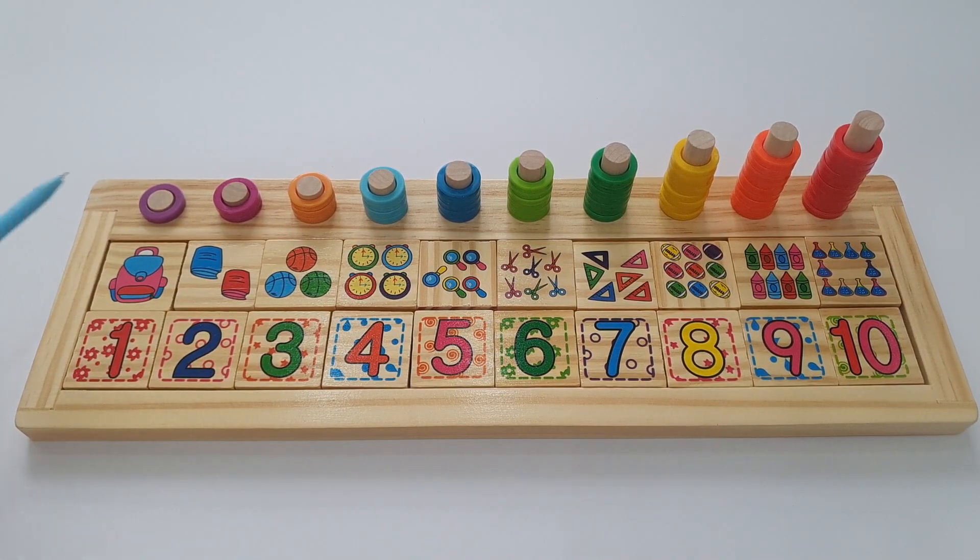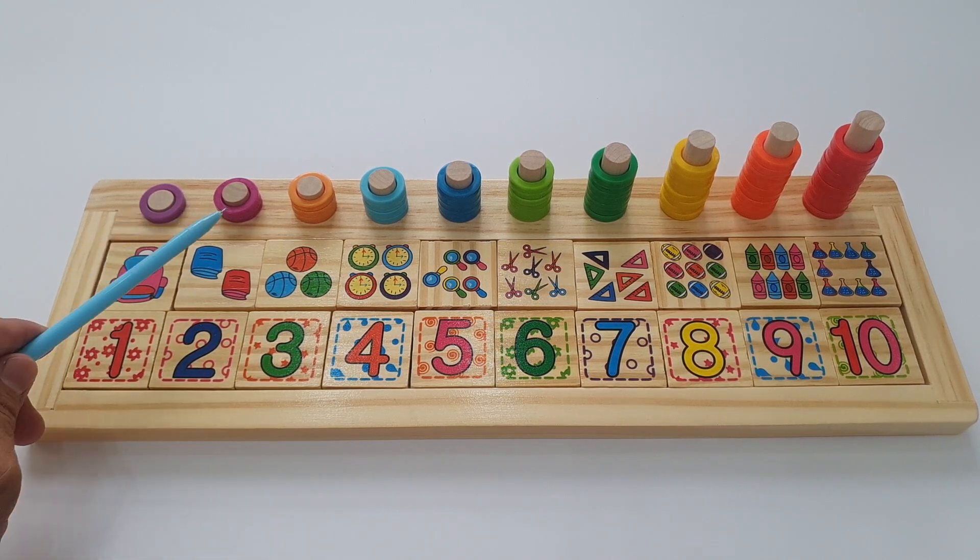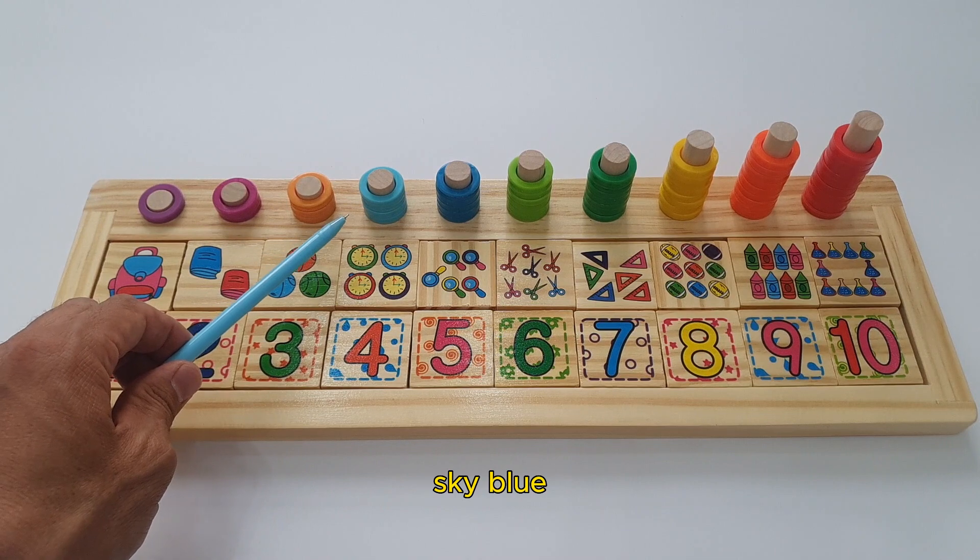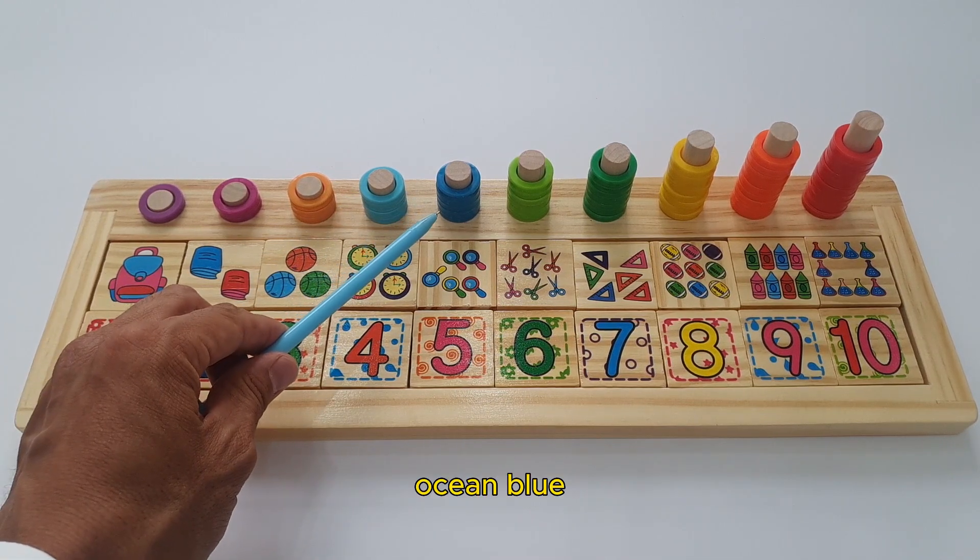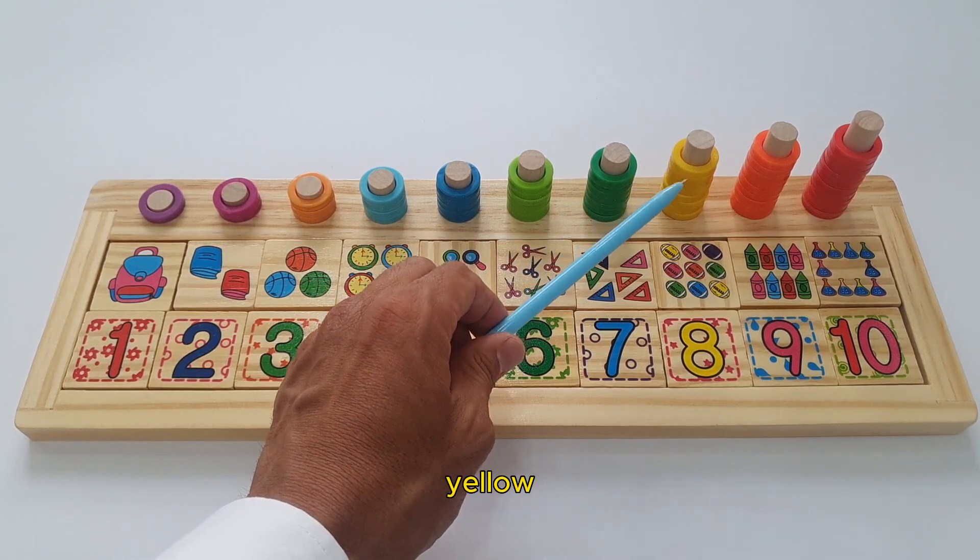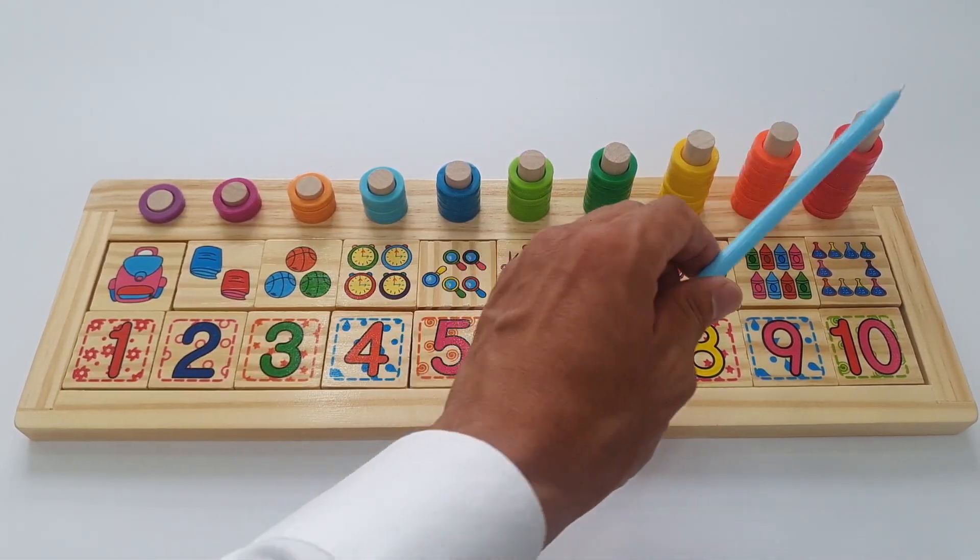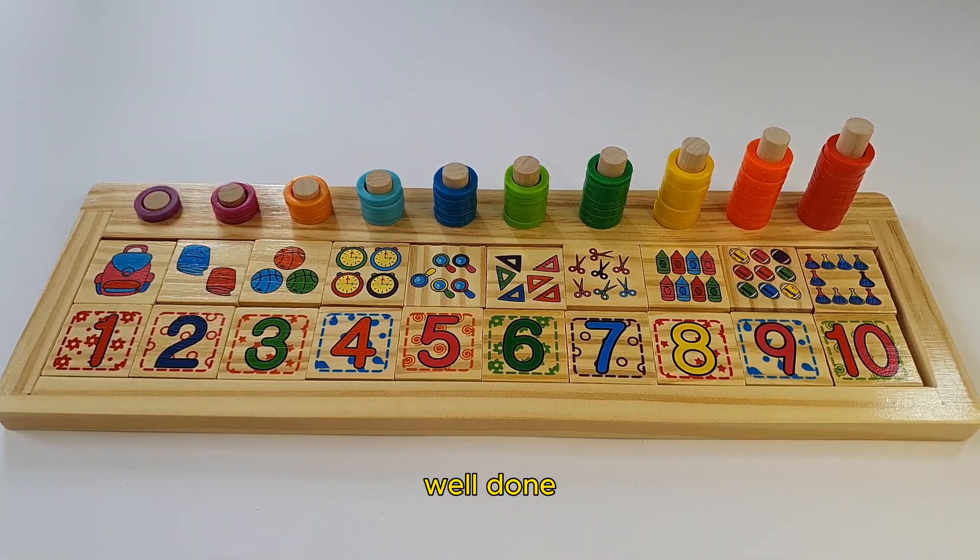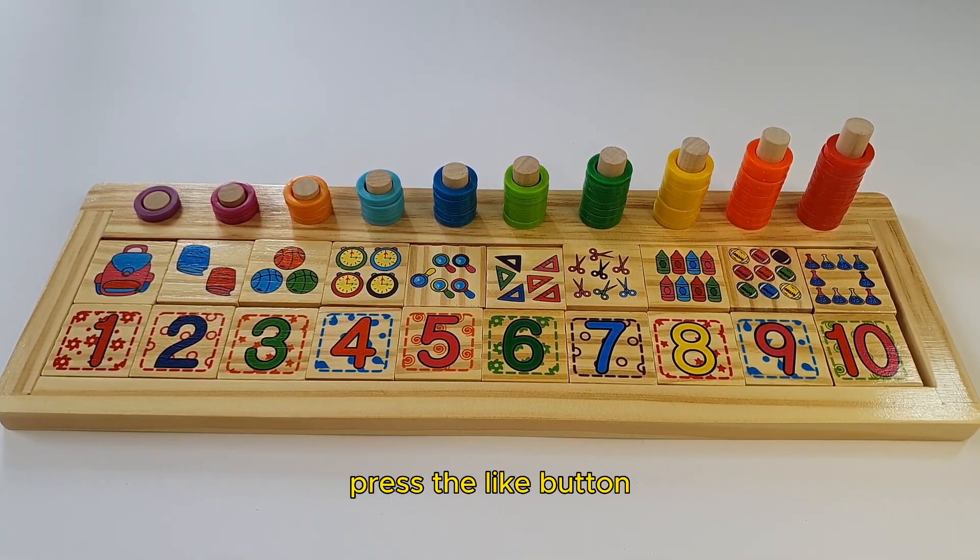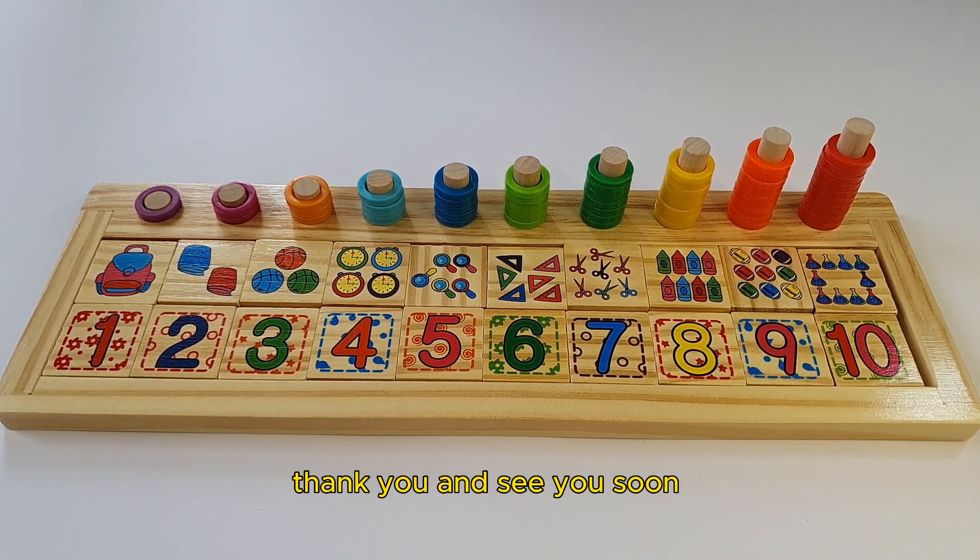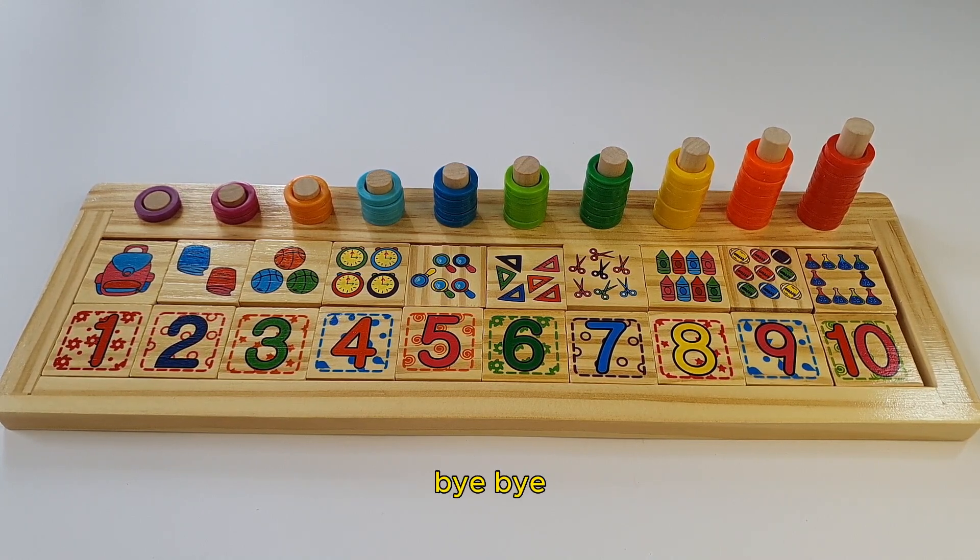Let's review the colors of the rings. Purple, violet, golden, sky blue, blue, ocean blue, light green, green, yellow, orange, red. Well done! Please press the like button and subscribe to our channel. Thank you and see you soon, bye bye!